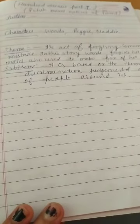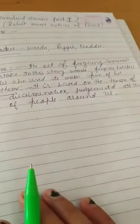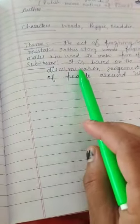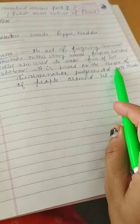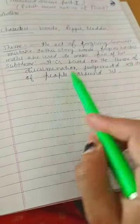In the story we have three main characters: Wanda, Peggy, and Maddie. The theme of the story is the act of forgiving someone's mistake. In the story, Wanda forgives her classmates who used to make fun of her.